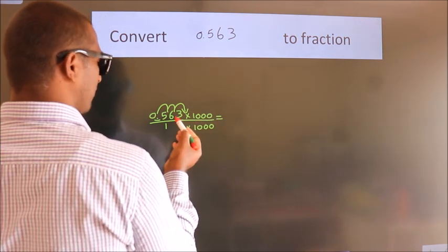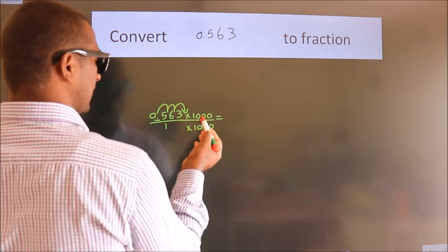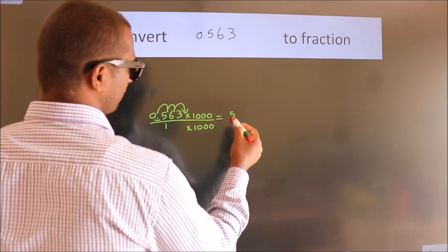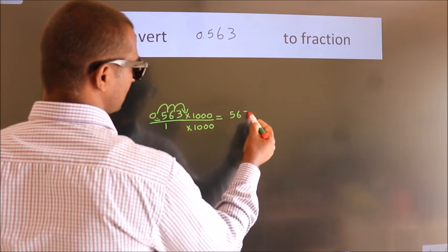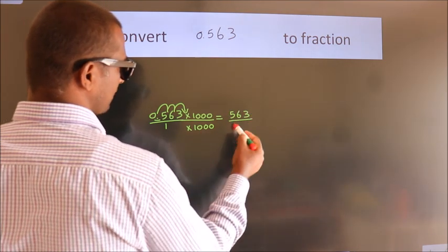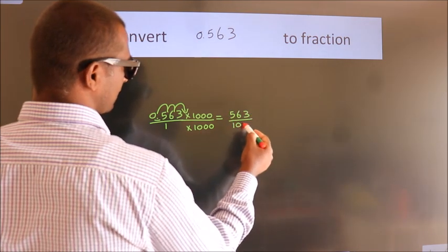0.563 into 1000 equals 563. 1 into 1000 equals 1000. So we get 563 over 1000.